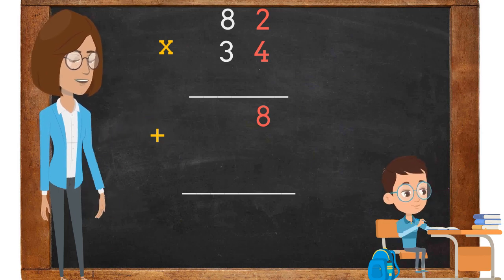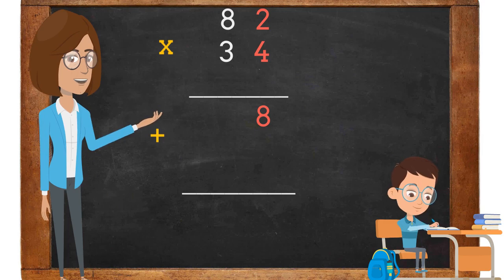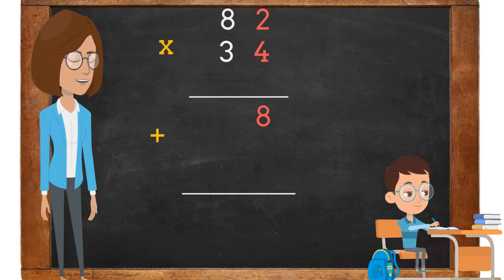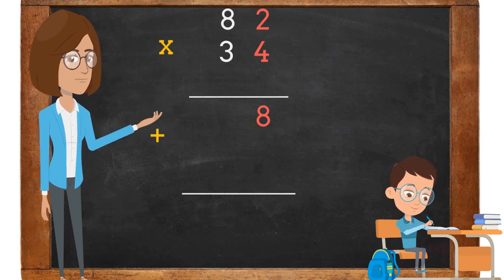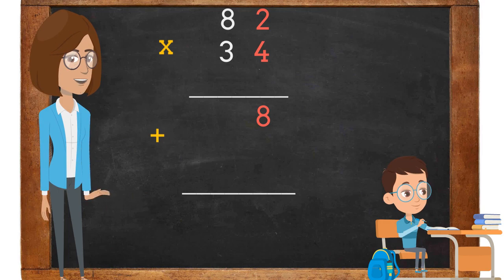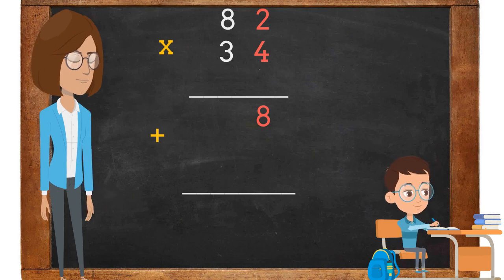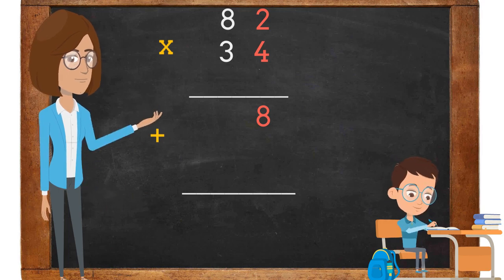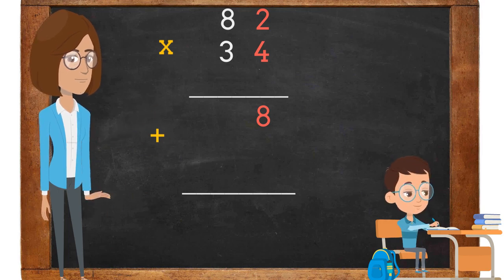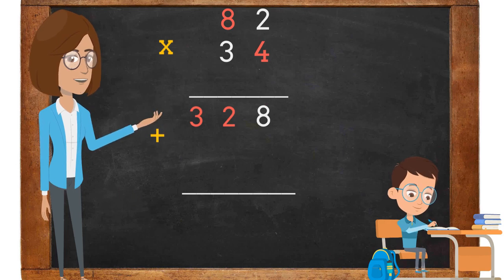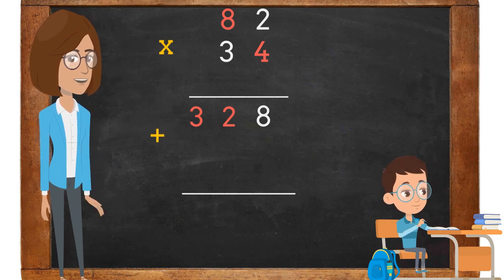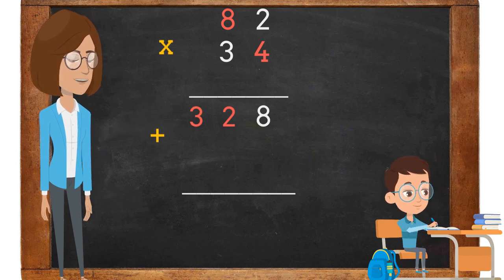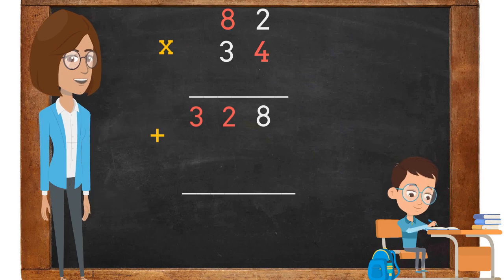The first step is to multiply the numbers in the ones place. 4 times 2 is 8. The second step is to multiply 4 times 8. 4 times 8 is 32.